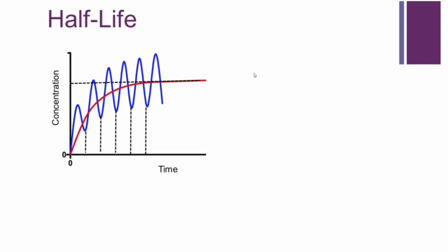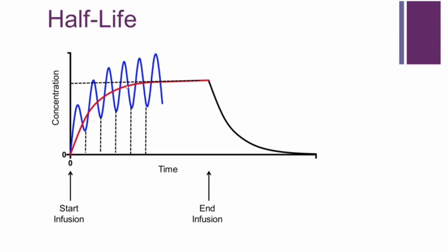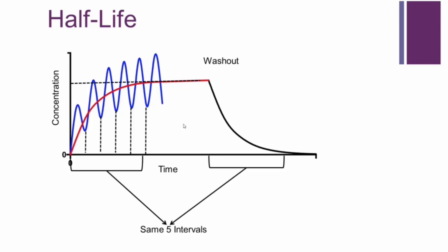An important pharmacokinetic parameter is half-life, defined as the time it takes for half the drug to be eliminated. Each drug has its own half-life that needs to be characterized. As you give repeated doses — for example, an IV infusion — when you stop, the drug clears during the washout period, and the time for half the drug to be eliminated is the half-life. Within five to seven half-lives is how long it takes the drug to be completely cleared from circulation, and also how long it takes to reach steady state with repeated oral dosing.